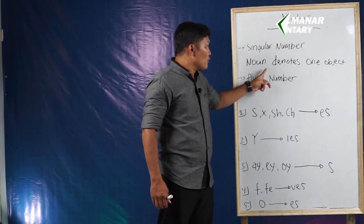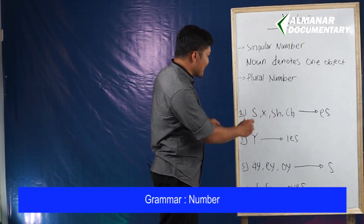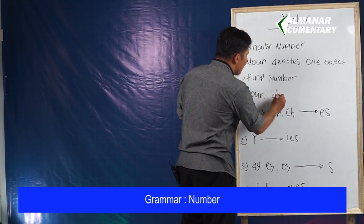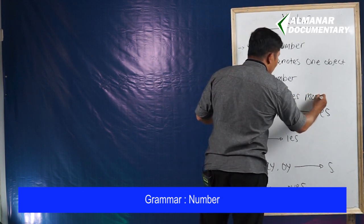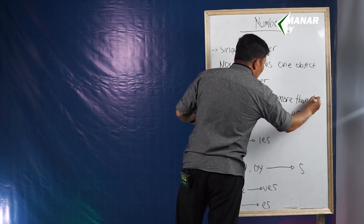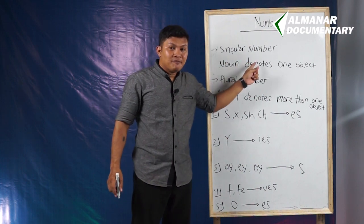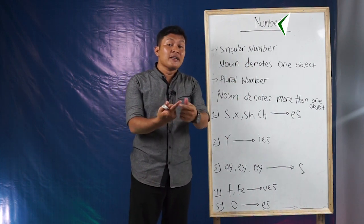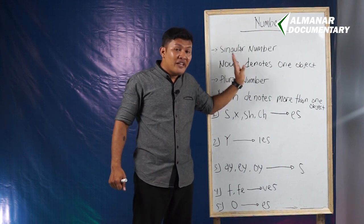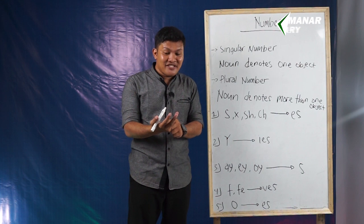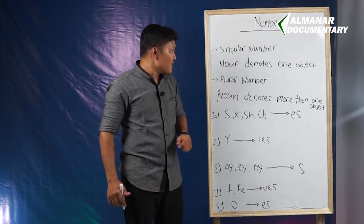What's the difference between singular number and plural number? If singular number is talking about a noun that denotes one object only, in plural number the noun denotes more than one object. For example: two pens, three chairs, four men, five tables, six cars, and so on.